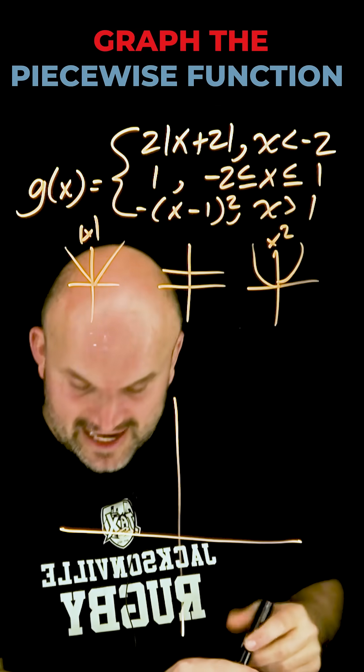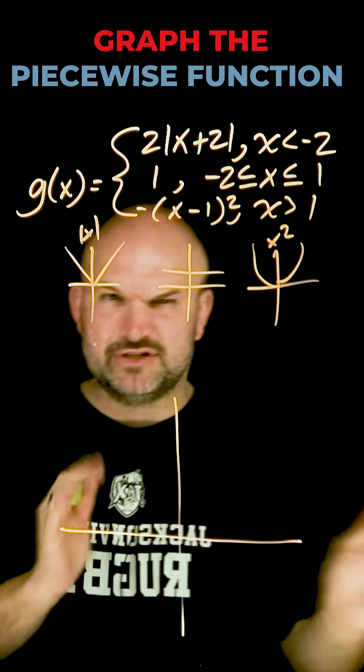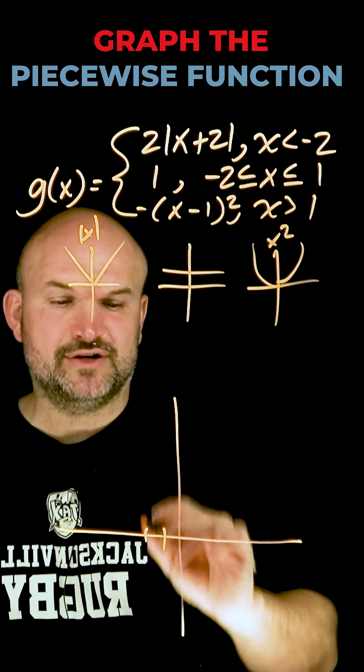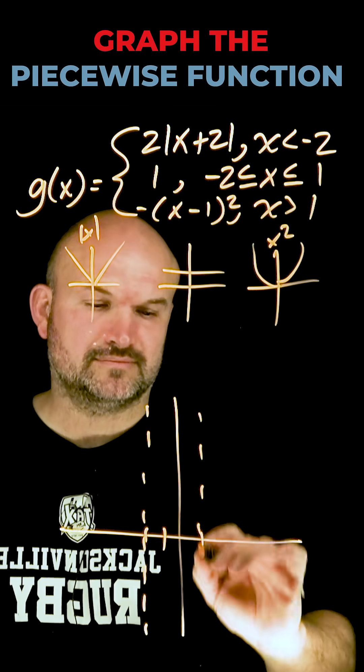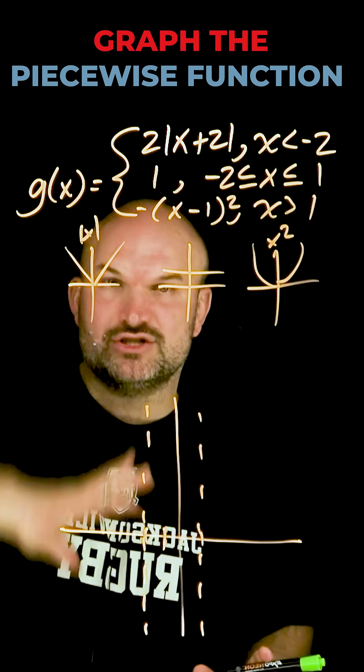And then we have our domain restrictions. Now what I like to do when I have multiple domain restrictions that are not on the y-axis, I'm just going to draw a little dashed lines to separate my graph. So I have negative 2, I'm going to draw a nice little horizontal dashed line, and I have positive 1. The reason why I'm doing that is for each of these sections, one of these functions is going to be true.